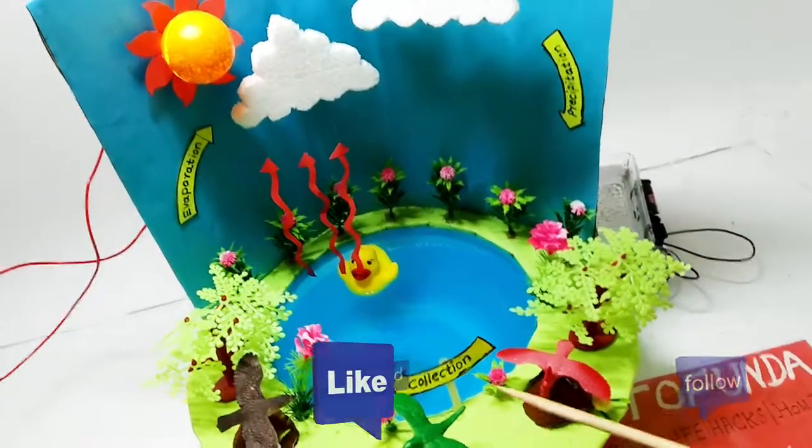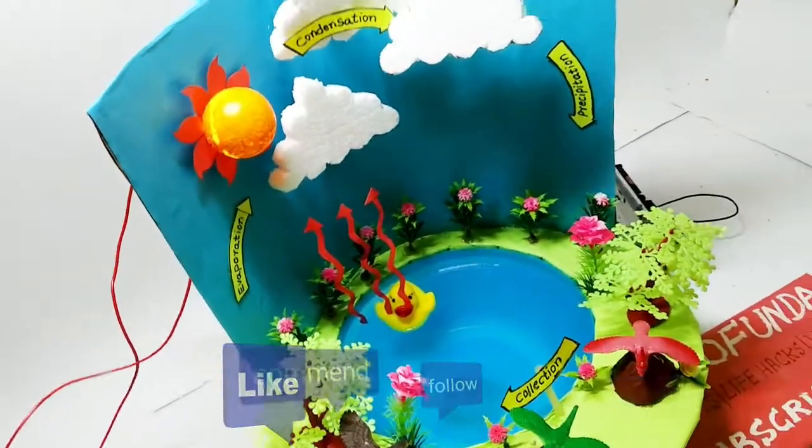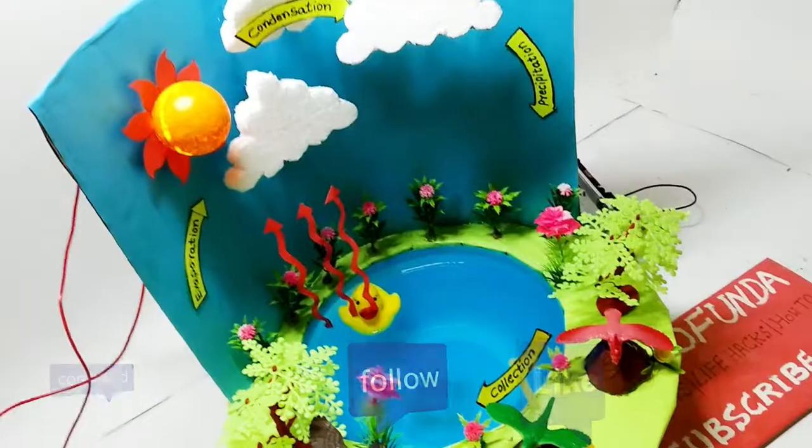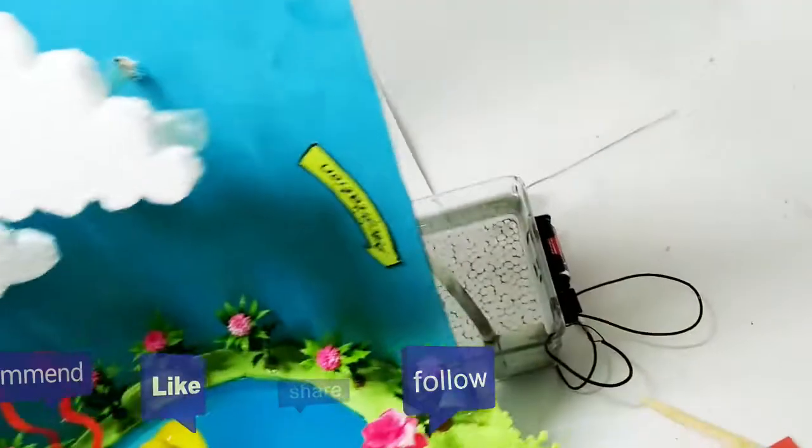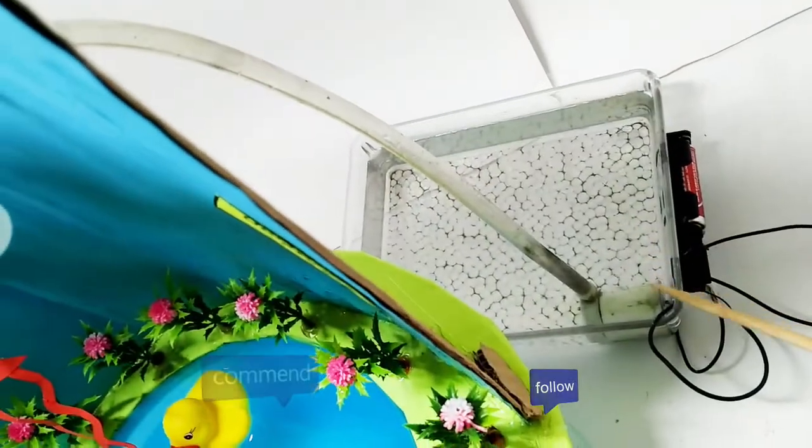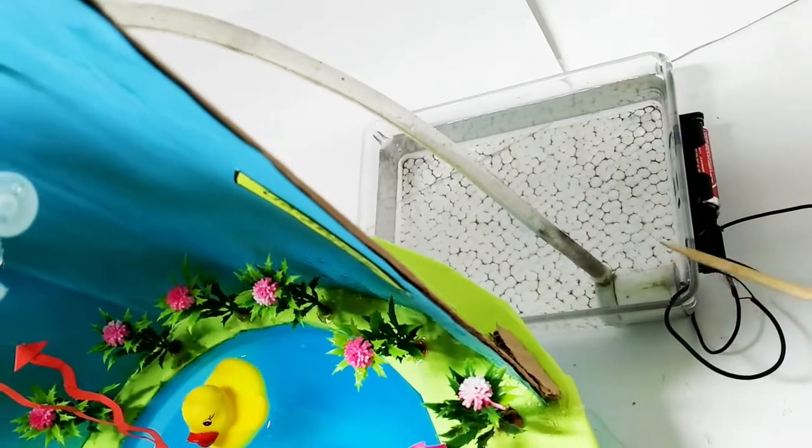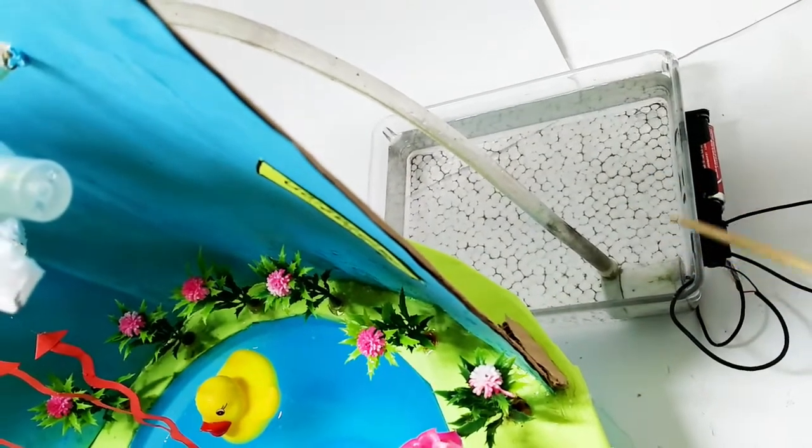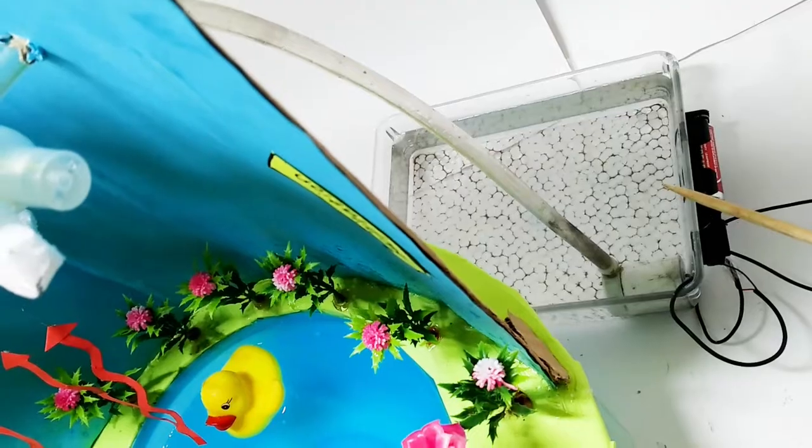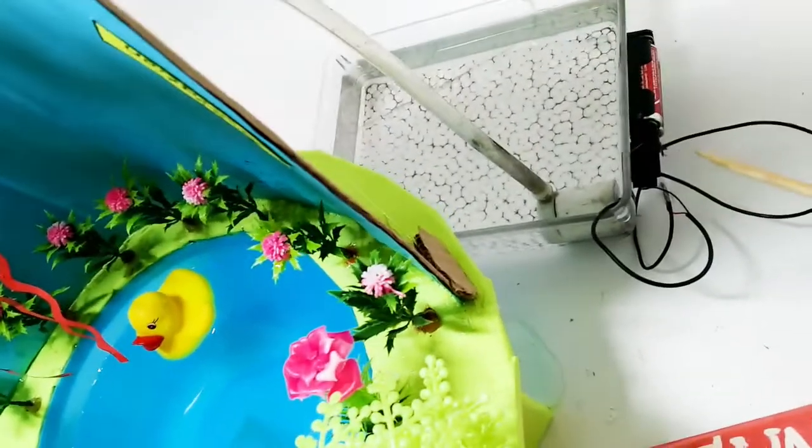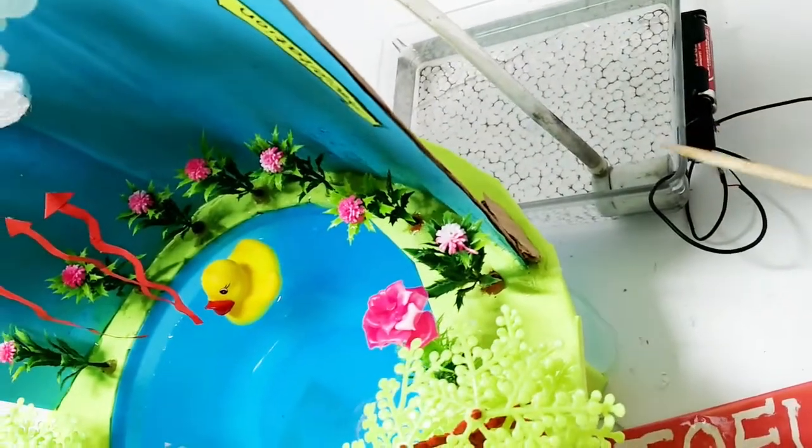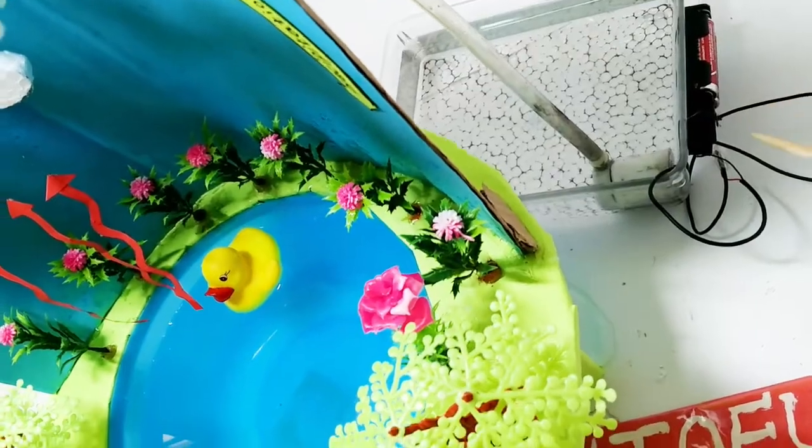Now I'll show you how we implemented this water cycle model. We have placed a water pump here where we've stored the water, and we have a battery and switch to run the motor.